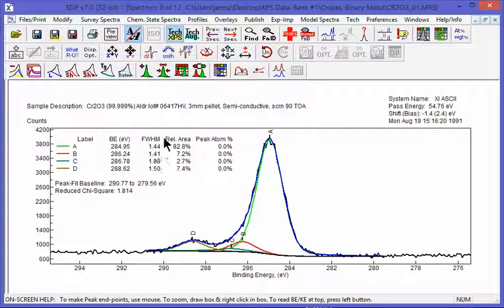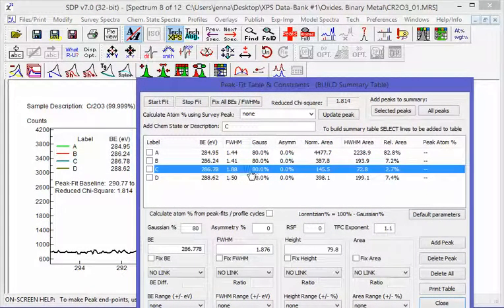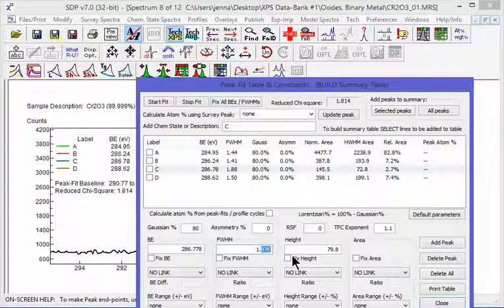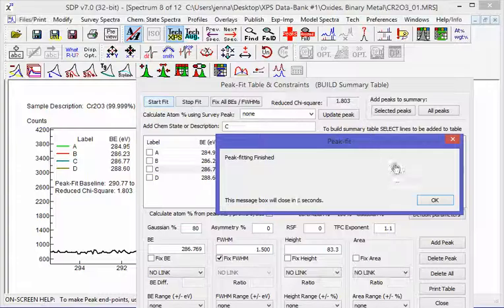We check the full width half maximum. It's the most important. We like to have all the peaks within plus minus 10% of each other. Peak C is on the broad side. So we want to go in to the peak fit table and control it. We're going to take this number and modify it to be similar to those. We're going to choose a value of 1.5 and fix that value. And we're going to press start fit. It iterates once more.